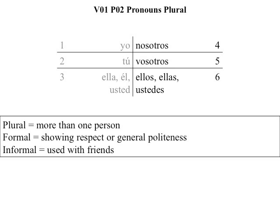Vosotros, meaning 'y'all,' which is the contraction of 'you all,' is informal, meaning it's used for a group of friends or a group younger than yourself. Ellos and ellas both mean 'they.' Ellos refers to a group that is all masculine or mixed with male and female. Ellos refers to a group that is all feminine or female.